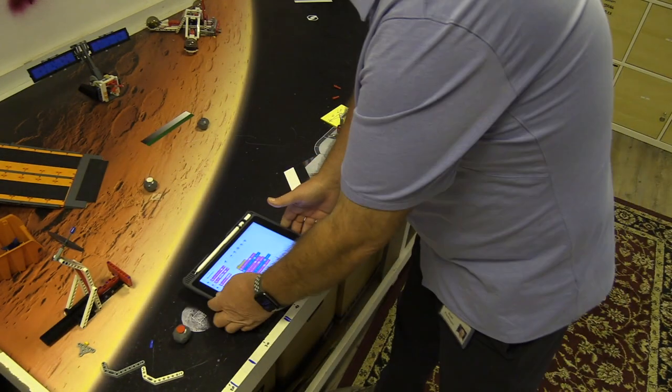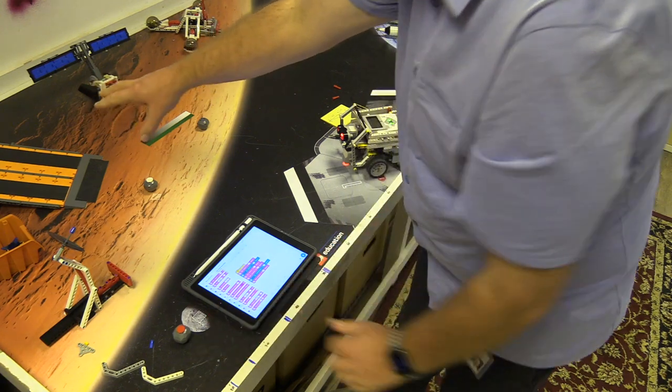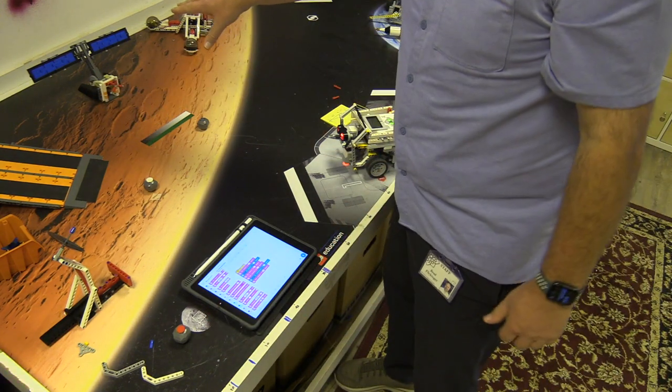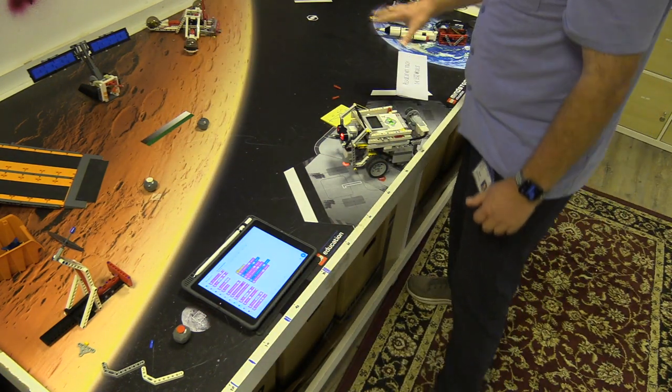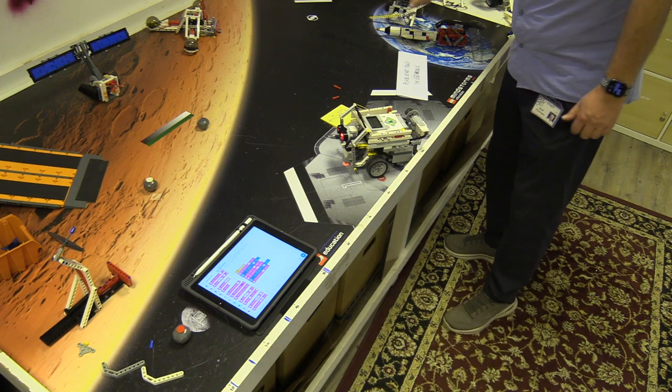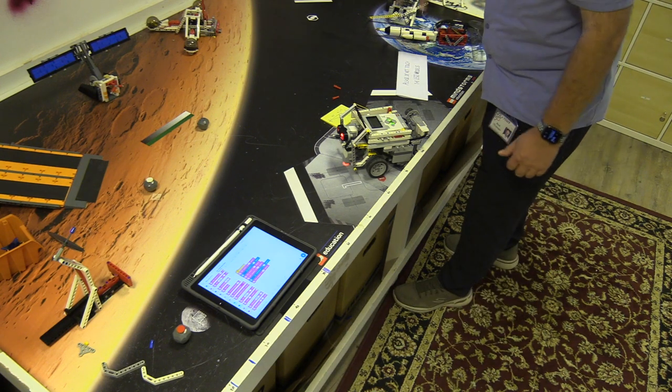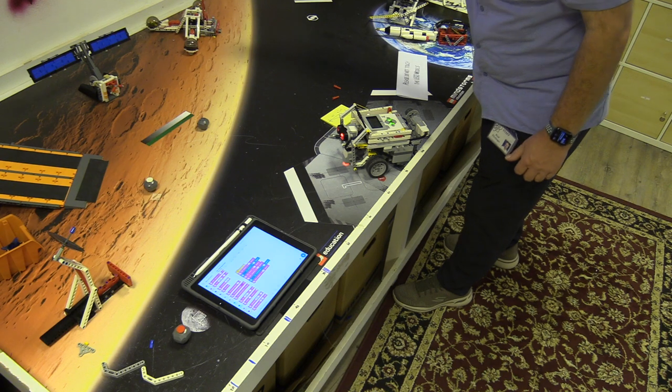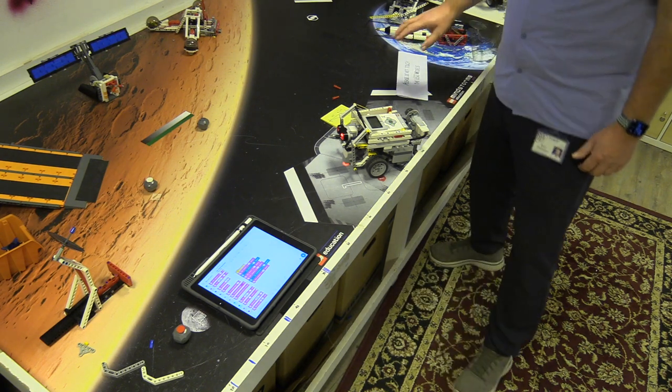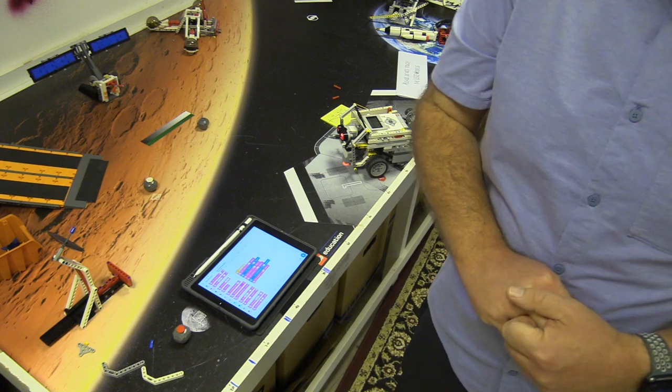And then move on to the next one which is rescuing the rover there and then opening up the solar panels. And then finally launching the rocket here with all the samples in it back to this little home base here. So that's what you need to do to complete this level. So good luck with everything.